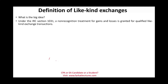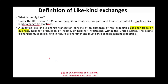A non-recognition treatment for gains and losses is granted for qualified like-kind exchanges. We are not going to go into the nitty-gritty of what's considered a like-kind exchange, but on the CPA exam and enrolled agent exam, they will tell you this is a qualified like-kind exchange. For example, if you have a building and you exchange it for a warehouse, they're pretty flexible. A qualified like-kind exchange must involve real properties — real buildings, land, something attached to the land — and it has to be used for trade or business, or held for production of income or investment. It cannot be personal use property.